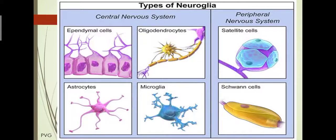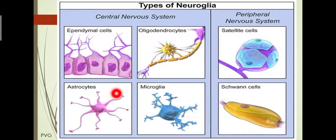The next type of central neuroglial cells is astrocytes. These are star-shaped and present in abundant numbers in the central nervous system. They have varied roles in brain secretion and absorption of neural transmitters, maintenance of the blood-brain barrier (BBB), and regulation of electric impulse transmission within the brain.